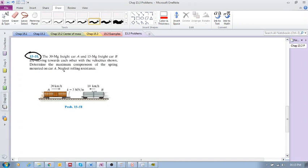All right guys, let's have a look at problem 1551. Here we have two freight cars A and B traveling toward each other. Freight car A is going at 20 kilometers an hour to the right, and B is going 10 kilometers an hour to the left.